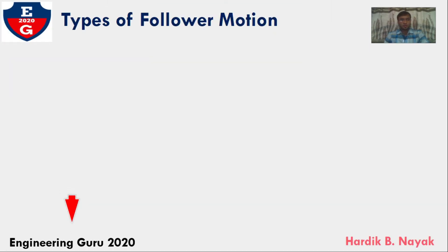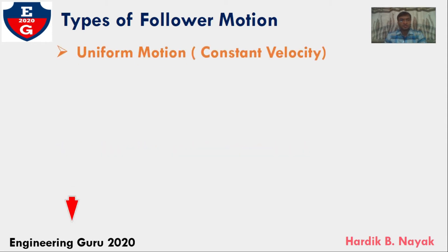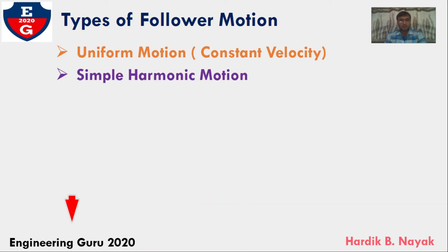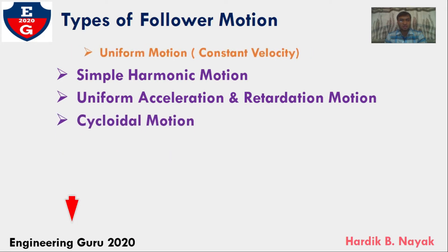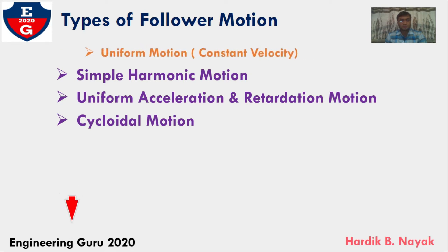The follower during its travel may have one of the following motions. First, uniform motion — it is also called constant velocity. Second, simple harmonic motion, that is SHM. Third, uniform acceleration and deceleration motion. And finally, cycloidal motion. Here we will learn the displacement diagram for uniform motion, that is constant velocity.